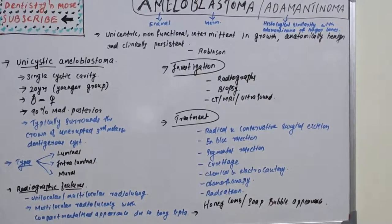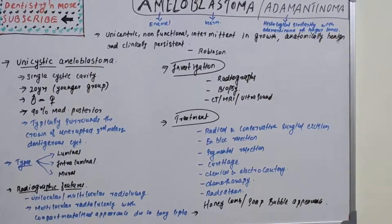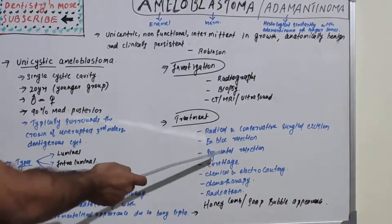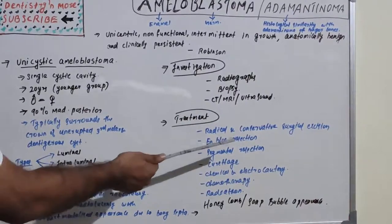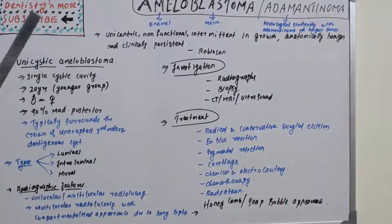Treatment options include radical and conservative surgical excision, en-bloc resection, segmental resection, curettage, chemical and electrocautery, chemotherapy, and radiation. For peripheral ameloblastoma, simple excision or enucleation/curettage is performed — removal of the tumor by scraping from surrounding normal tissue. En-bloc resection is removal of the tumor with a rim of uninvolved bone while maintaining jaw continuity.